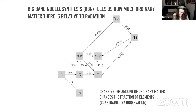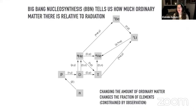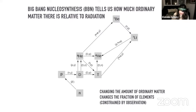BBN tells us basically how much ordinary matter there is relative to radiation. In this flow chart showing what happens during BBN, we have all these different pathways where photons are inputs — between protons and deuterium and various species — in this very complicated flow chart of different nuclear reactions in the early universe. If there's some change to the amount of photons relative to ordinary matter, that's going to change the relative abundances of different light elements. By measuring primordial abundances of these elements, we can tell how many photons there were relative to baryonic matter.